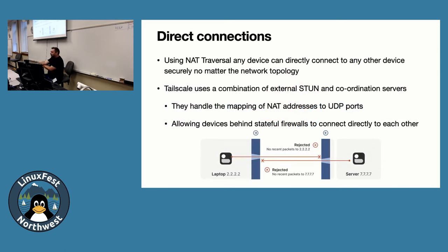The STUN server's job is to do what's called NAT traversal. If you're thinking — if I don't need to know my IP address and don't need to open a port, how are these things making a direct connection? Using NAT traversal, Tailscale abuses the way stateful firewalls work. When I send out a request on UDP port 2222, my outbound firewall notes it, and if it hears something back from that address within 30 seconds, it allows it back in. That's how all stateful firewalls work — mildly terrifying.